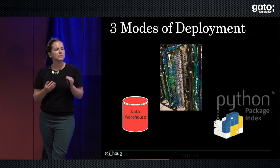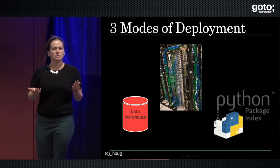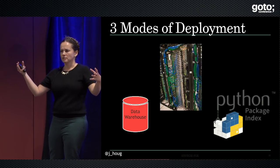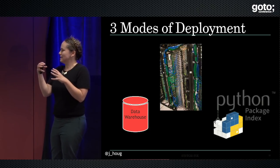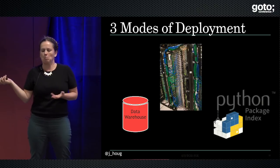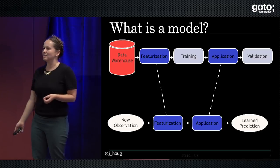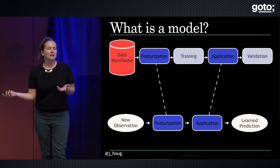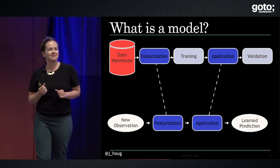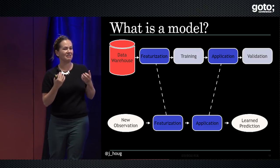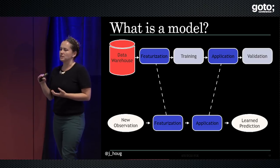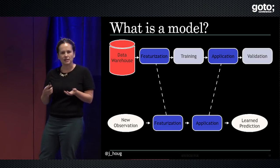The third way — probably the least common but still possible and I've seen it happen — is through a software package. You can imagine having built a model, putting parameters in it, and then deploying it to some package repository where someone else can download that model and use it. I keep talking about models like it means something, and I think there are actually a lot of terms in machine learning, data science, AI that are pretty poorly defined. Model is one of them.